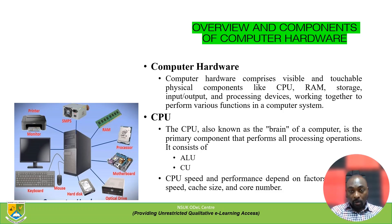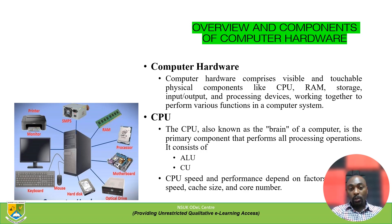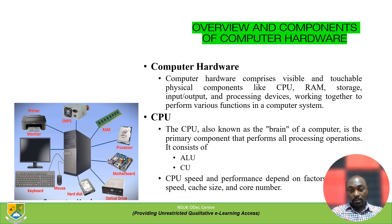Computer hardware comprises those components that are visible — you can see and touch them. They include components like the Central Processing Unit, Random Access Memory (RAM), storage devices, input/output devices, and processing devices. They work together to perform various functions in your computer system.